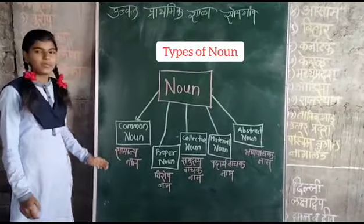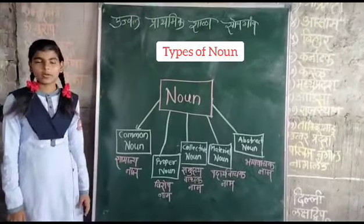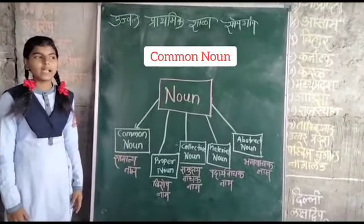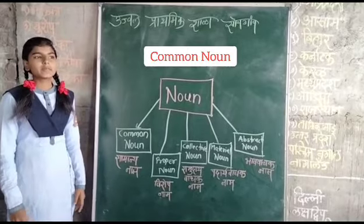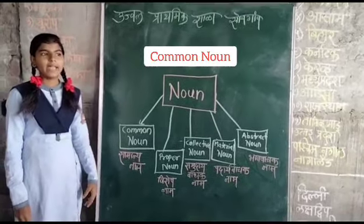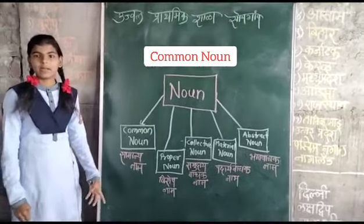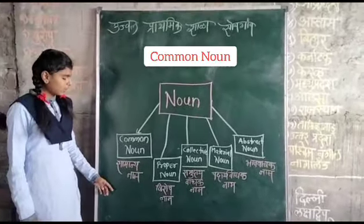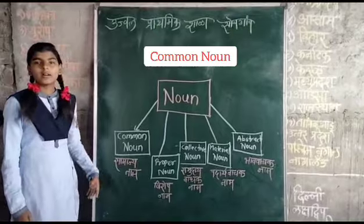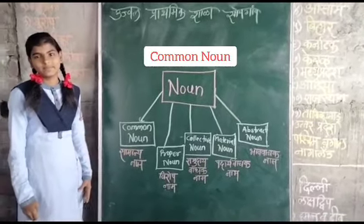Types of nouns. First is common nouns. Common nouns are that types of things, places and people. For example, girls, boys, flowers and books.